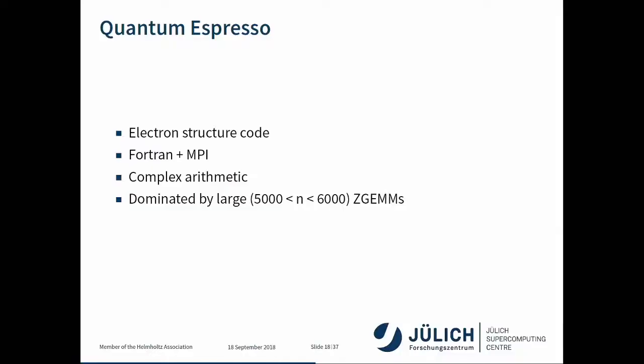The next application is Quantum Espresso. It's also an electron structure code written in Fortran with MPI and OpenMP support. This is dominated by complex arithmetic as well — again dominated by ZGEMM, but this time by large matrices, something on the order of 5,000 by 5,000 elements.